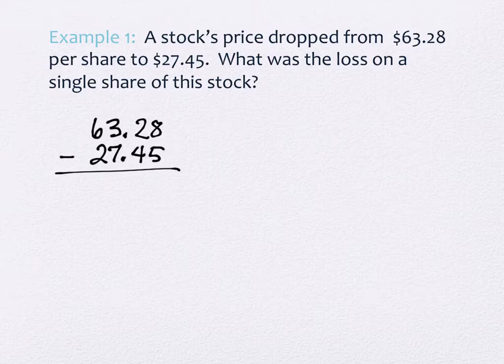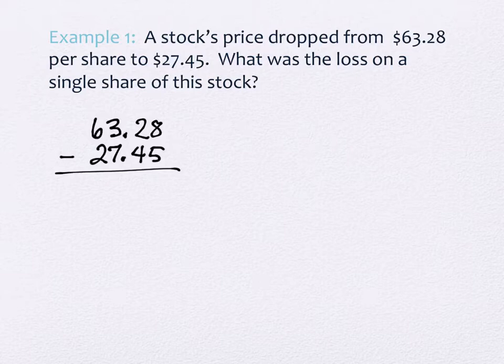You're going to show your work for this — not just use a calculator to confirm. In the first column on the right, 8 minus 5 is 3. But 2 minus 4 doesn't work, so I need to regroup. Thinking in terms of money: I have 3 one-dollar bills, I take one, leaving two one-dollar bills, and turn that dollar into 10 dimes. 10 dimes plus 2 dimes gives me 12 dimes. So 12 minus 4 gives me 8. Then 2 minus 7 doesn't work either, so I regroup again. I borrow one of the 6 ten-dollar bills, leaving 5 ten-dollar bills, and that becomes 10 one-dollar bills. 10 plus 2 gives me 12 one-dollar bills, and 12 minus 7 is 5.